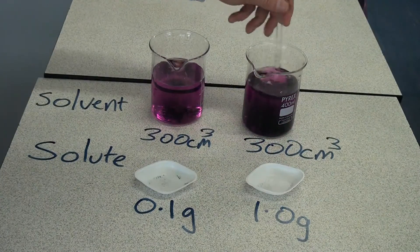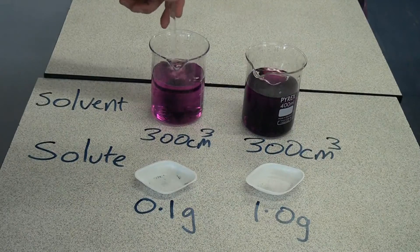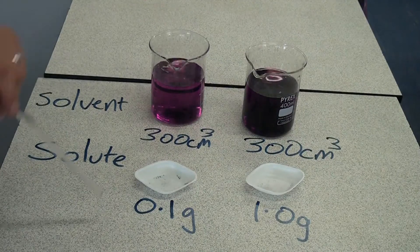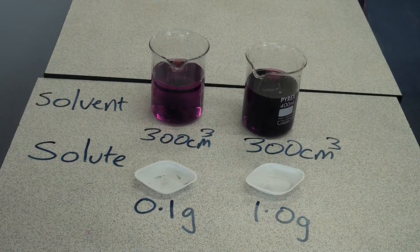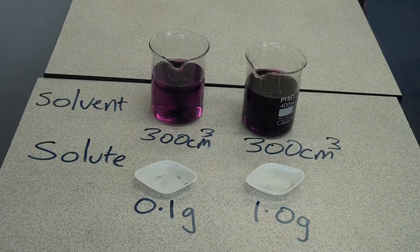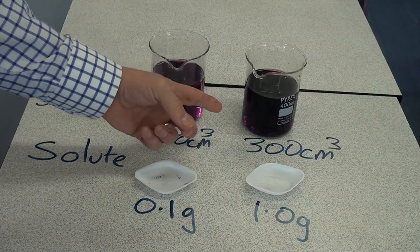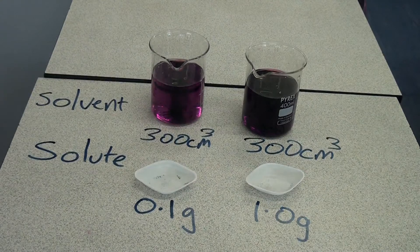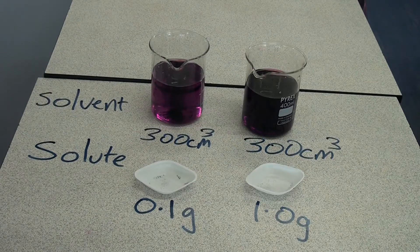When talking about solutions, it's really important to avoid using words like strong and weak. In everyday language people might say that's a stronger solution because it's a deeper colour, but that relates to the acids and alkalis topic and means something different in chemistry. Instead, we would say this one is a more concentrated solution, as we can see with the deeper colour, and this one is a less concentrated solution, or we could say it's more dilute.